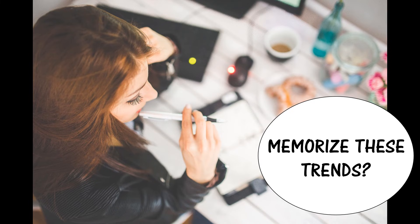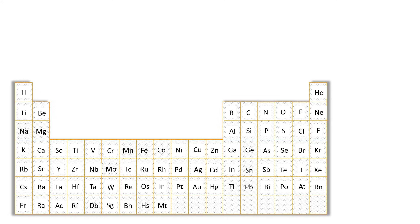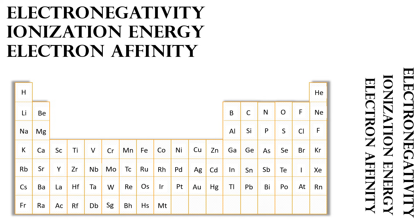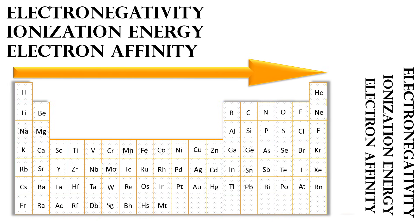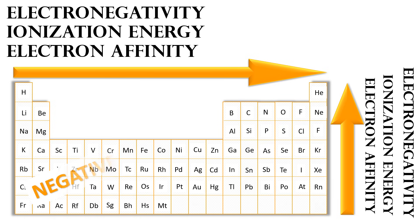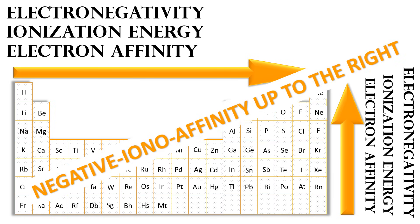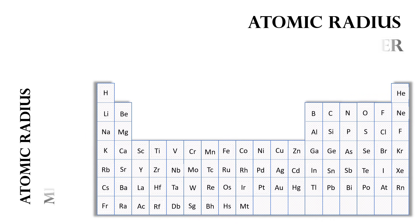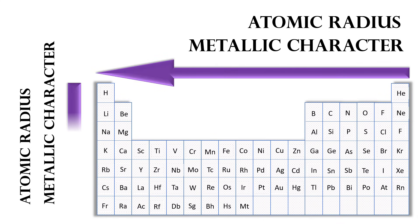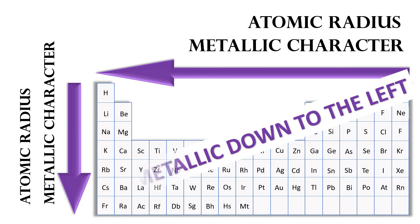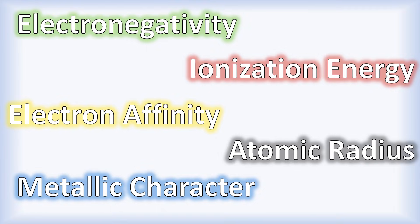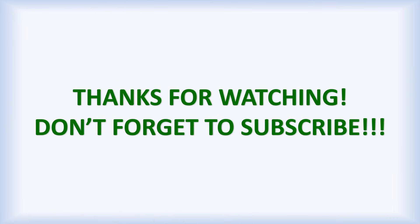To memorize all of these trends: electronegativity, ionization energy, and electron affinity all increase from left to right and from the bottom to the top of the periodic table — remember 'negative ionoaffinity up to the right.' Atomic radius and metallic character typically increase from right to left and from the top to the bottom — remember 'radio metallic down to the left.' And those are all the periodic trends!